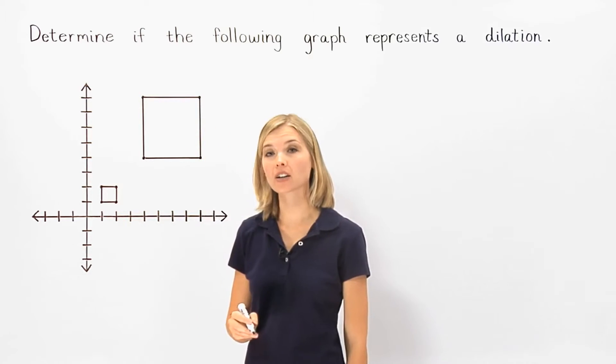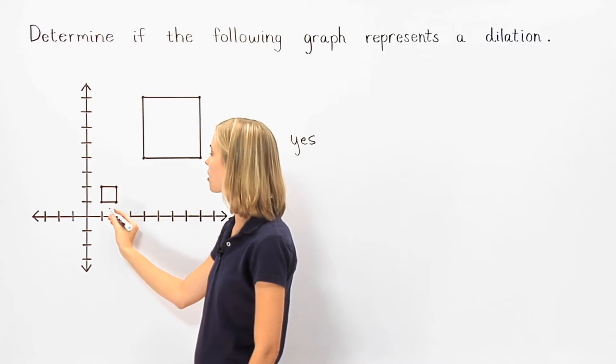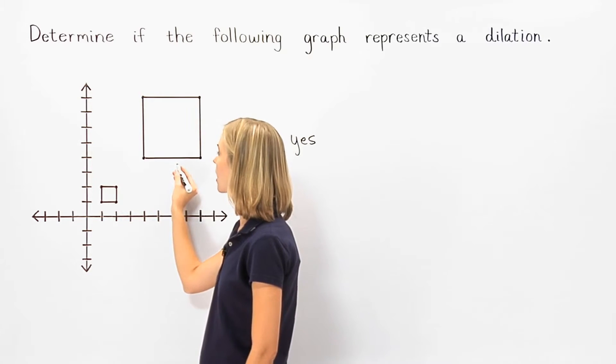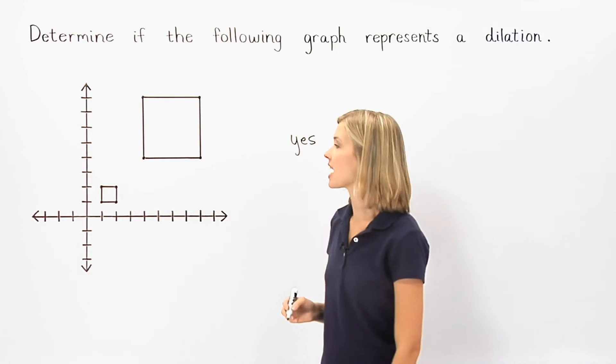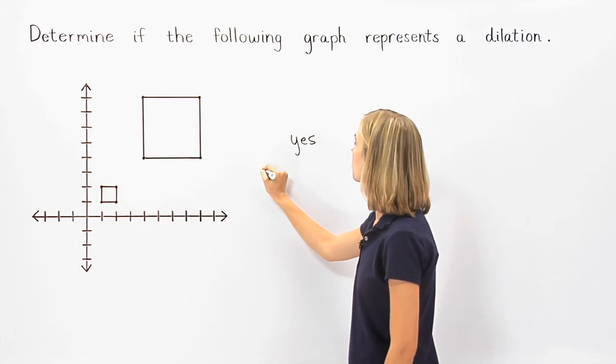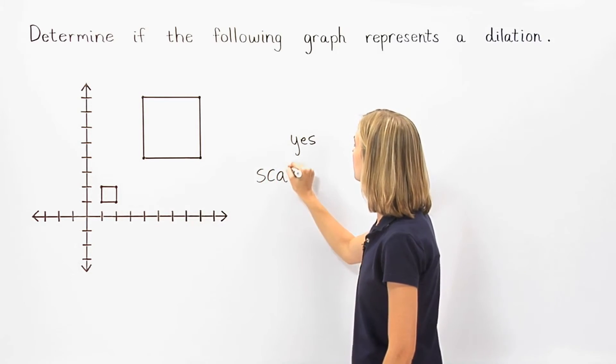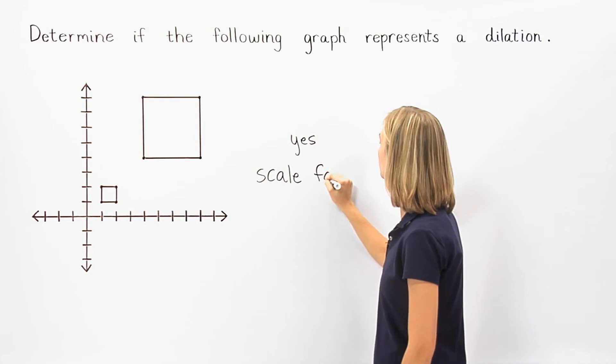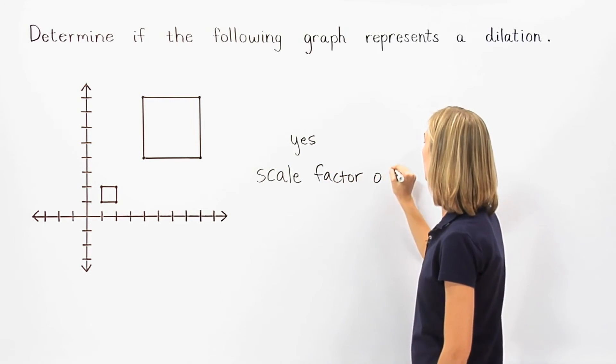we say that the scale factor used to transform the smaller square to the larger square is four. So the answer is yes. The graph represents a dilation with a scale factor of four.